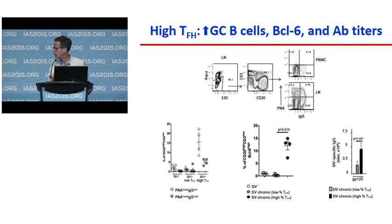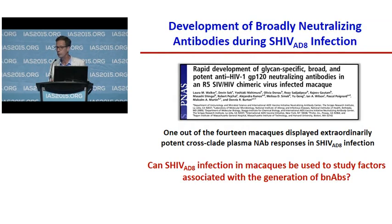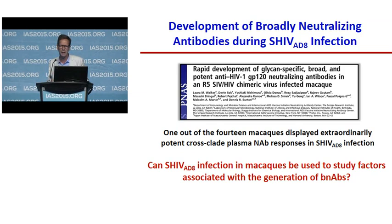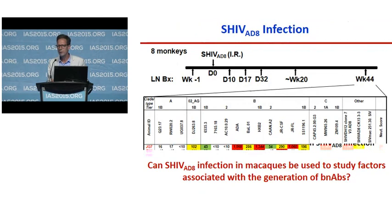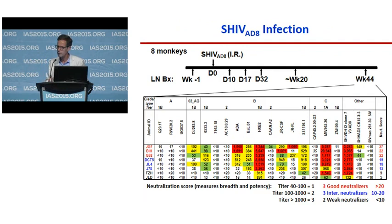Just as Mark Connors had mentioned, what correlated with the ability to generate broadly neutralizing antibodies in humans also held for monkeys: higher viral load and lower CD4 predicted better neutralization. We looked at T follicular helper cells defined by CXCR5 and PD1 expression and saw a modest correlation. To go deeper, we decided to look at HIV envelope-specific or SIV-specific T follicular helper cells and B cells in the germinal centers to see how those correlated with neutralization.